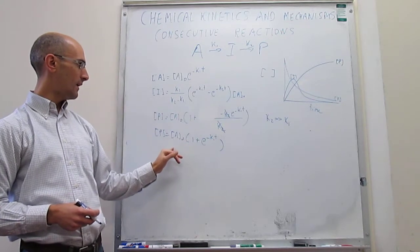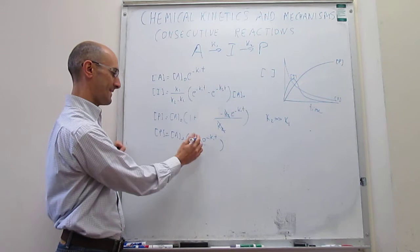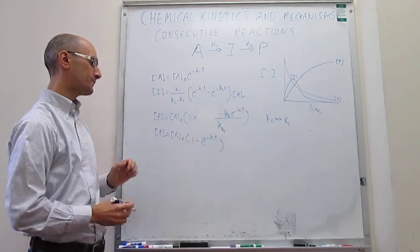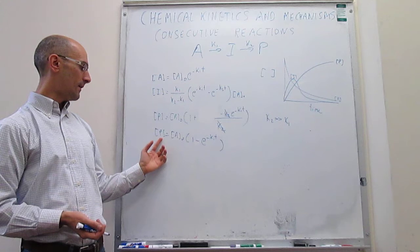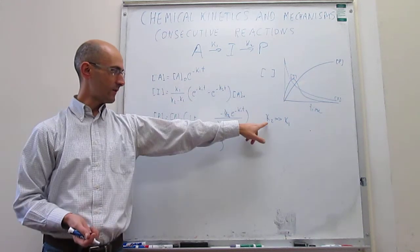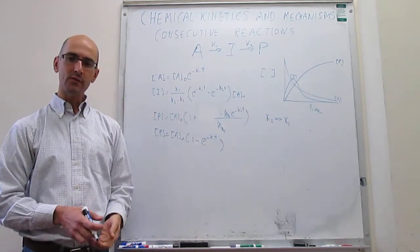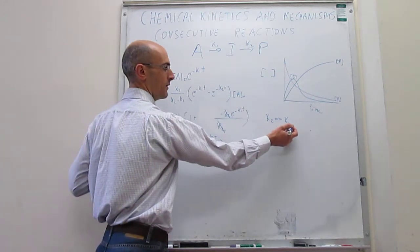Instead, the reaction rate, notice that I actually have a stick there, that is a negative sign, there we go. Notice that, regardless, the concentration of product does not depend on the concentration of, on the rate constant K2. Instead, it only depends on the rate constant of the first step, which is this one.